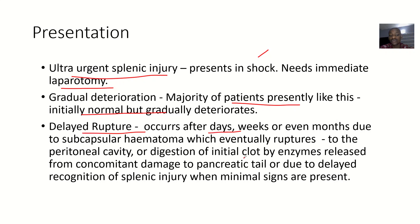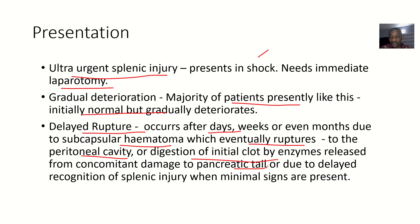Then there is delayed rupture, which occurs after days, weeks, or even months due to a subcapsular hematoma. There was bleeding in the spleen but it hadn't ruptured — it held down the bleeding for a very long time. After a long time, the bleeding will eventually rupture into the peritoneal cavity, causing hemoperitoneum. This can occur due to digestion of initial clots by enzymes released from concomitant damage to the pancreatic tail, or due to delayed recognition of splenic injury when minimal signs are present.